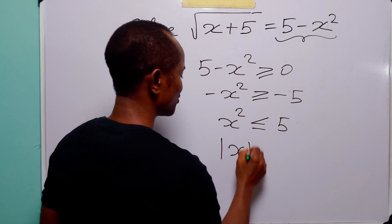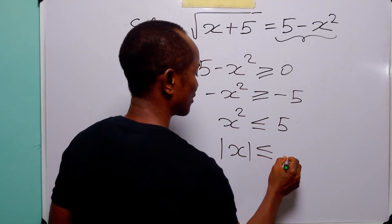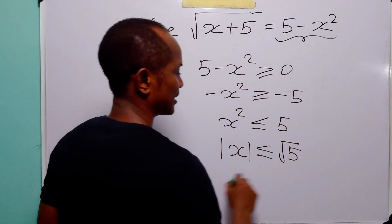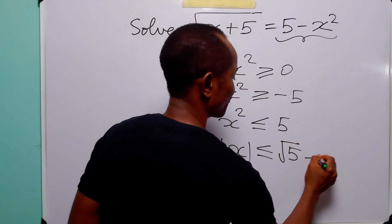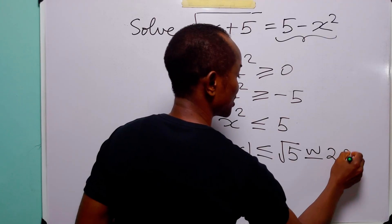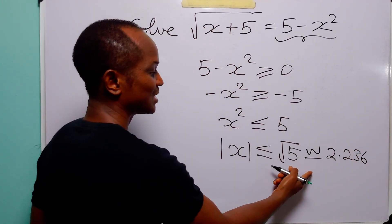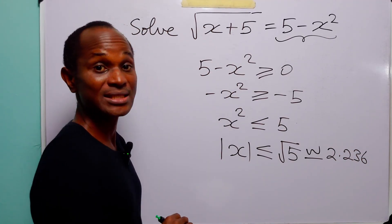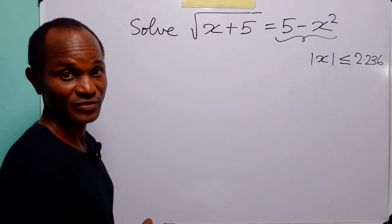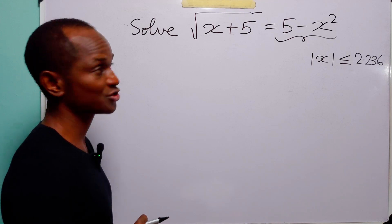From x² ≤ 5, we have that the absolute value of x must be less than or equal to the square root of 5, which is approximately 2.236. We'll keep this condition for later. Now, to solve the equation, we begin with a simple substitution.